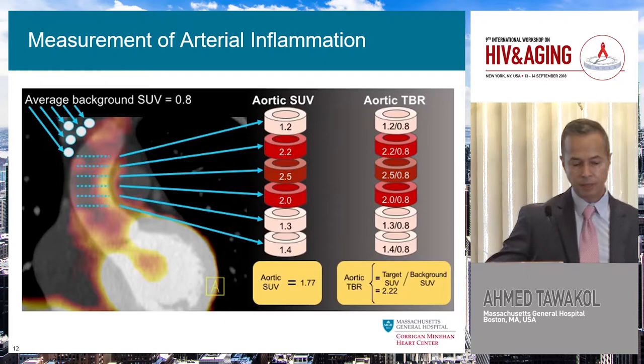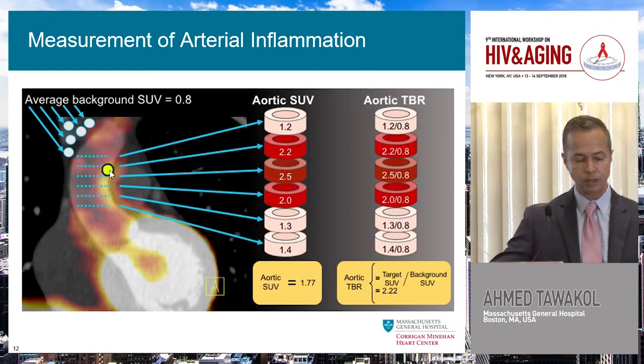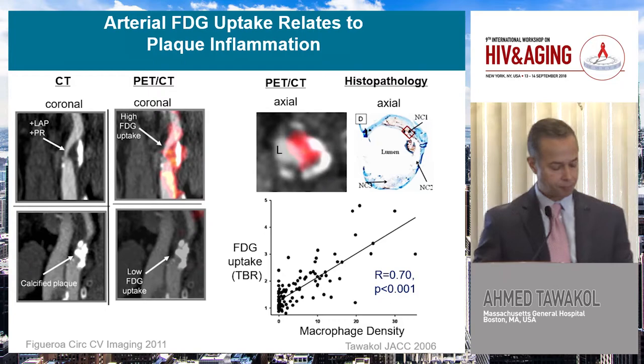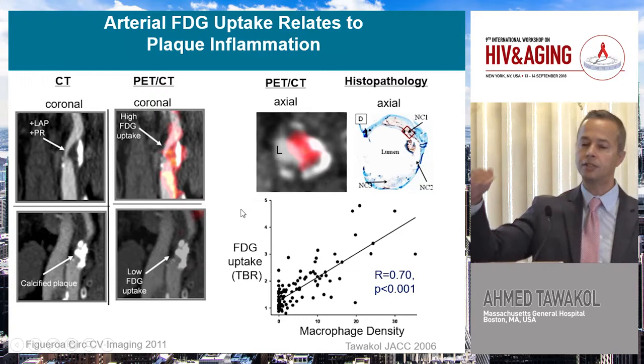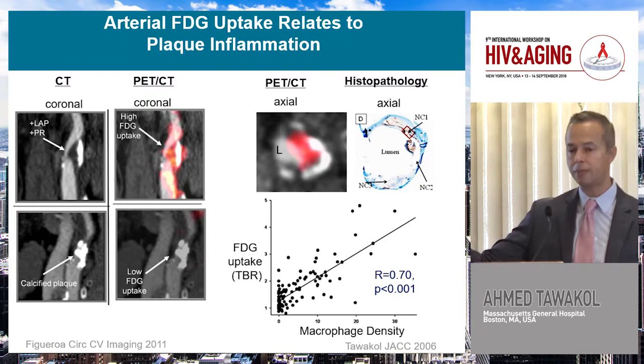We can also use FDG to measure inflammation in normal arteries. Here is the heart and the aorta. You simply place regions of interest across the aorta, measure backgrounds, get your aortic standard uptake values, and calculate target-to-background ratios — very quantitative results. Those quantitative findings tell you something important about the underlying biology.